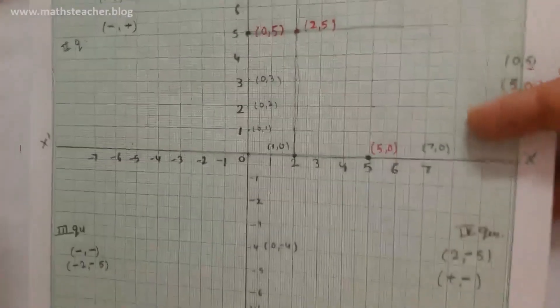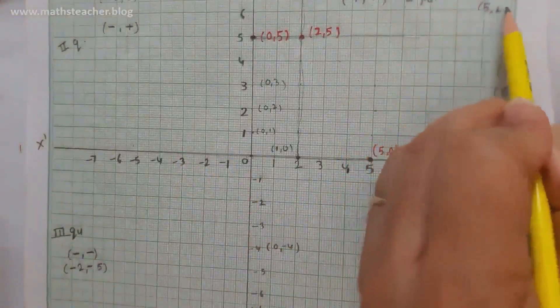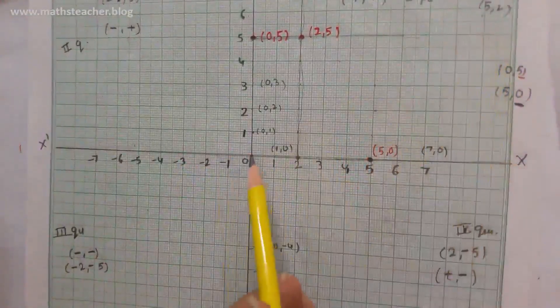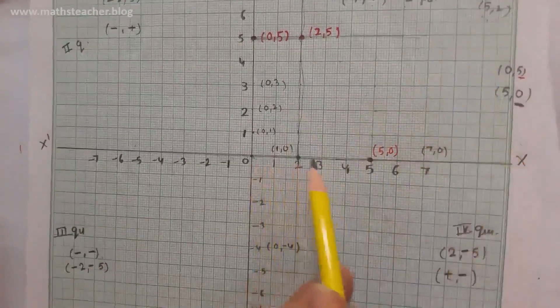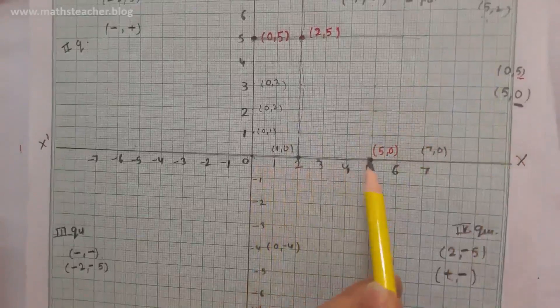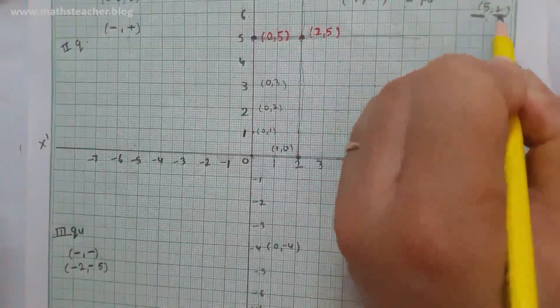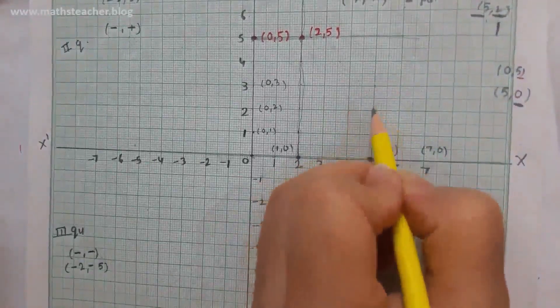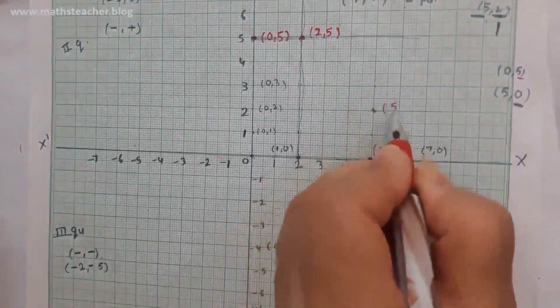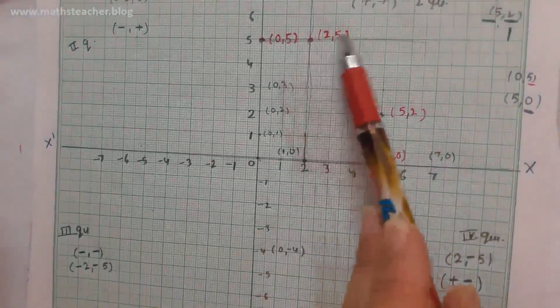Next, let's plot (5, 2). Using the first method: your first coordinate is 5, so go from 0 on the x-axis — 1, 2, 3, 4, 5 steps horizontally. Now go vertical: 1, 2 steps up. So this is our point (5, 2). Both are positive, so we go in the first quadrant.